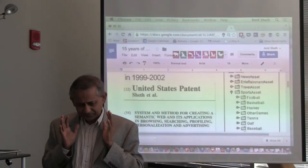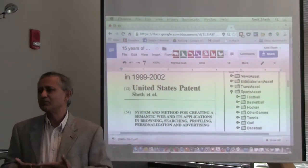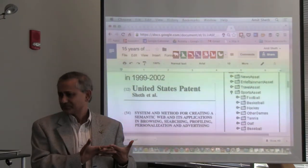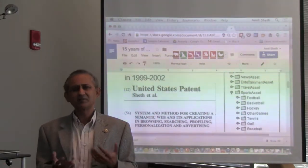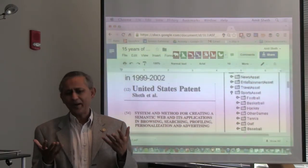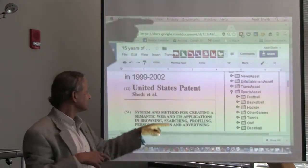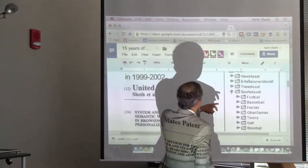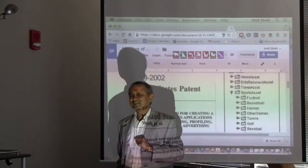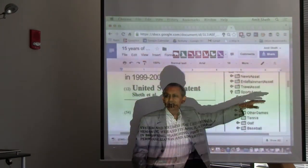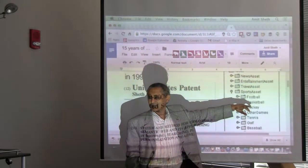There are two parts to an ontology. One is a schema-level part — a top-level hierarchy. For football, you have professional football and college football, and within that, leagues and everything. The other thing is factual knowledge — descriptions or instances, which are basically triples. Here's a brilliant thing we did: we didn't want to keep humans adding that knowledge, and I'm talking about 1999 and 2000.